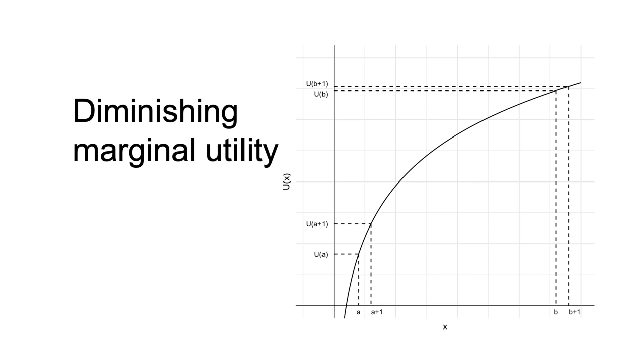Under diminishing marginal utility, each successive additional unit of consumption delivers a smaller, diminishing amount of utility than the last. This concept is illustrated in this diagram.